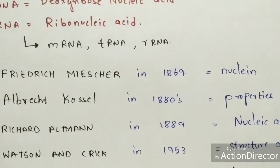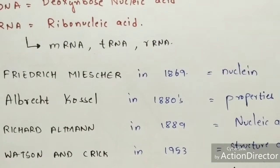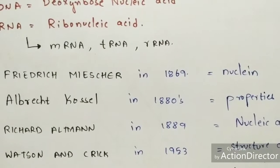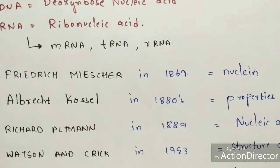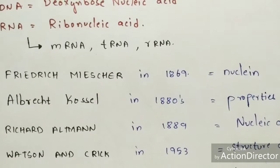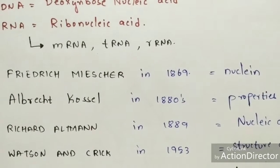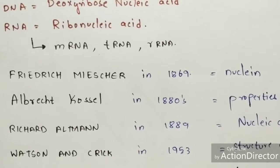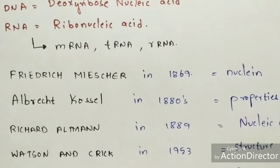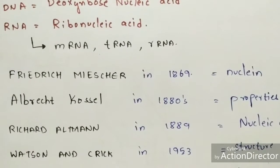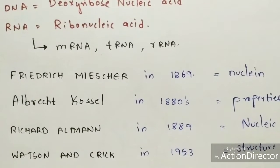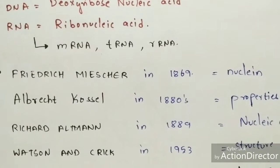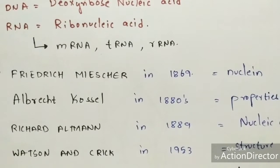Later, Albert Kossel in the 1880s came to know about the properties of nucleon — that it exhibits acidic properties. Based on this, Richard Altman in 1889 termed it 'nucleic acid' because it exhibited acidic properties.